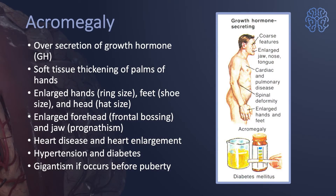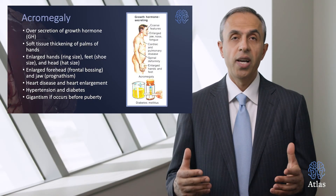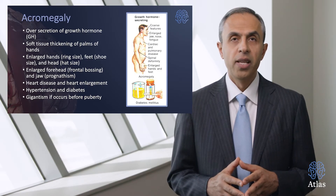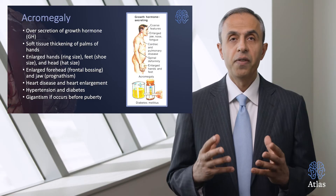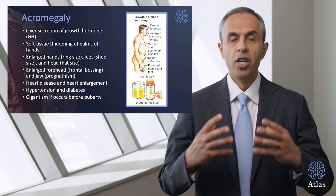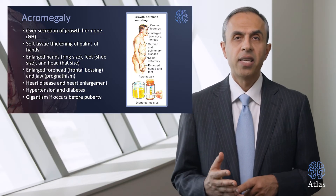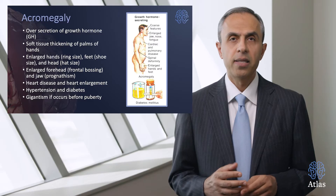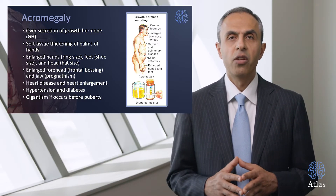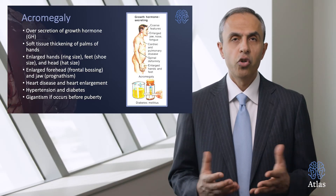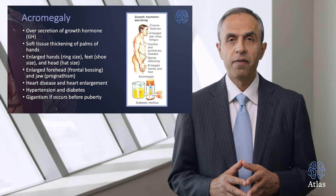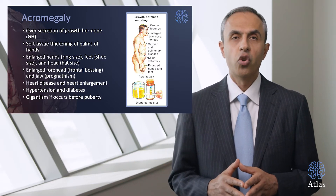How about acromegaly? It is caused by overproduction of growth hormone. Soft tissue thickening of the palms and hands occurs. Patients often complain about ring fingers getting tight or shoe sizes getting dramatically larger despite being well past puberty. Facial features can change significantly — the jaw can be elongated, hands can enlarge, and even head size and hat size can change. The forehead can increase leading to frontal bossing, and patients may even present with heart disease and heart enlargement, which can shorten their life.